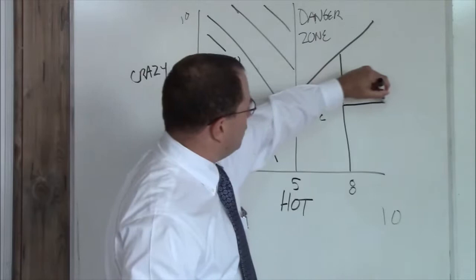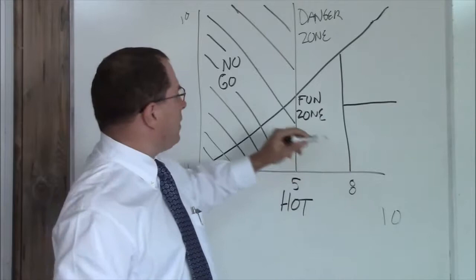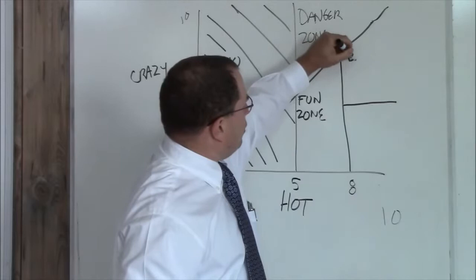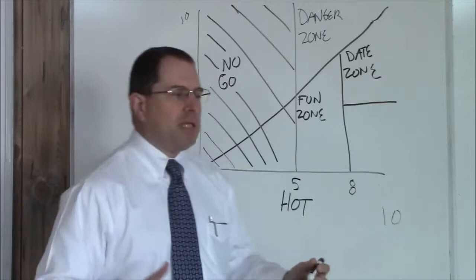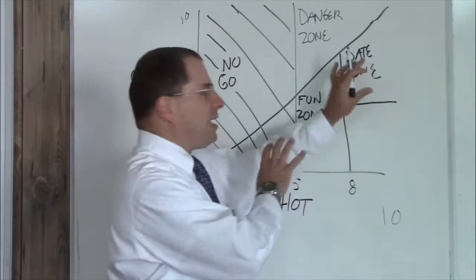Now, moving on, you have this zone here. This is below the crazy line. Above an eight hot, but still, you know, about a seven crazy. This is your date zone. You can stay in the date zone indefinitely. These are women that you introduce to your friends and your family. They're good looking and they're reasonably not crazy most of the time. So this is, you can stay here indefinitely.